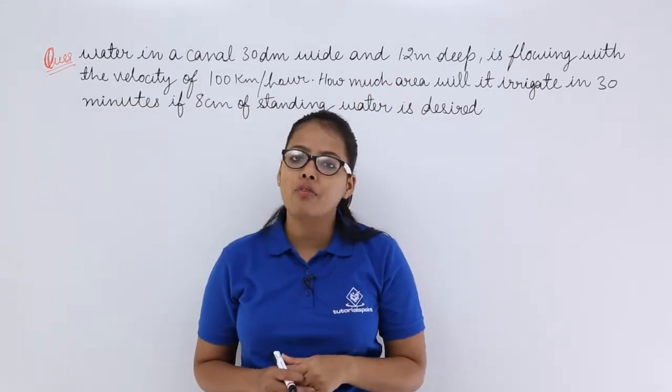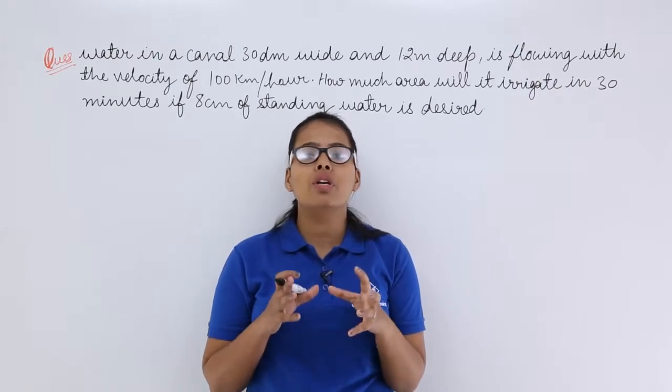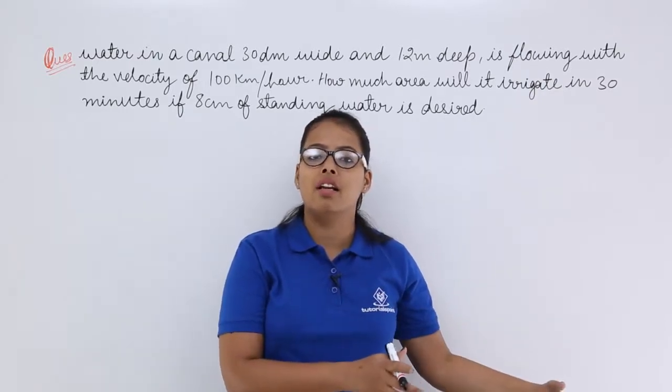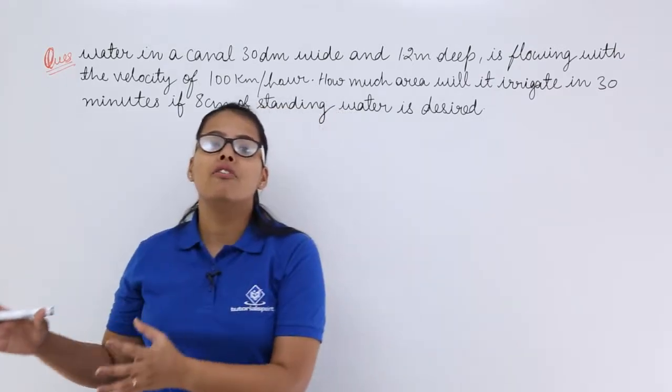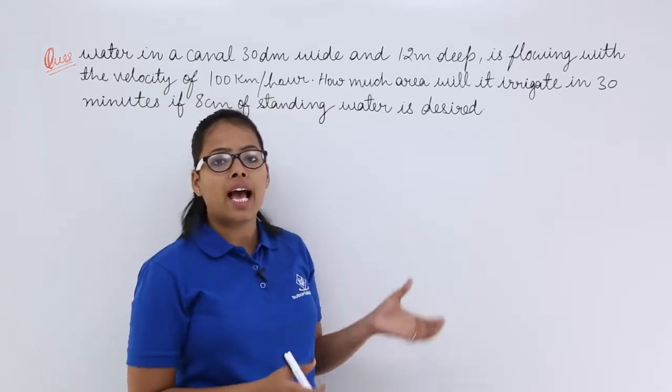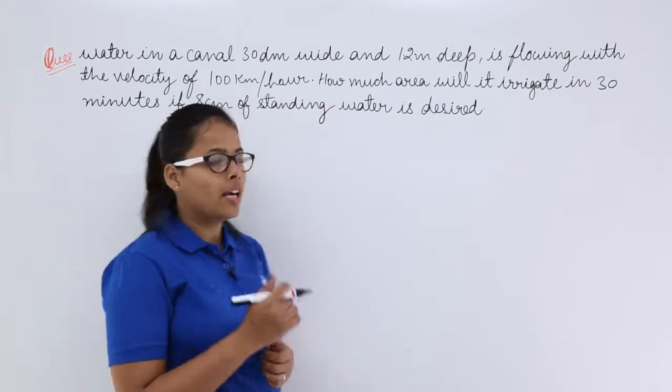So first of all what you have to do in this problem? You need to calculate the volume of the water contained in a canal and you will be using that water in the fields to irrigate that field. So first of all how you will calculate the volume of this water? Let's see.